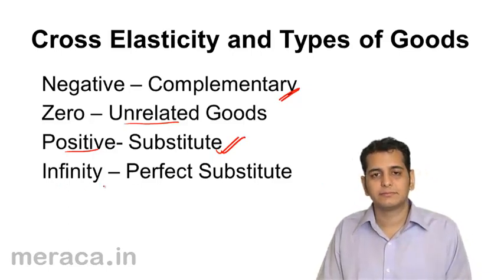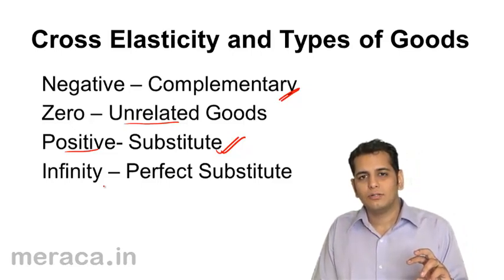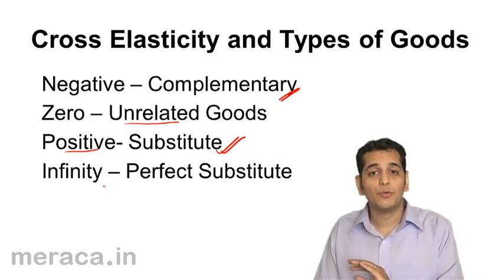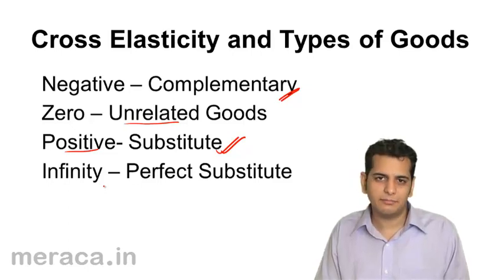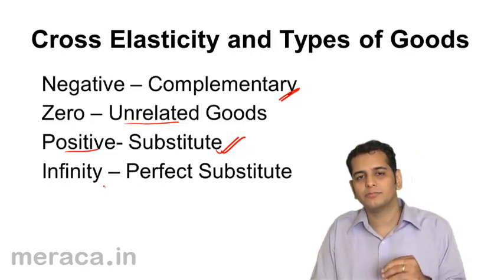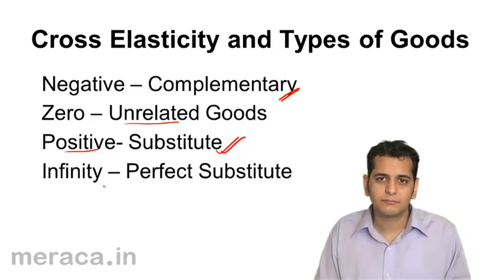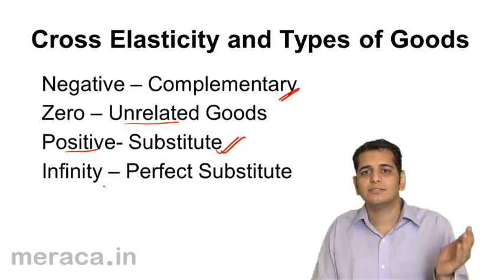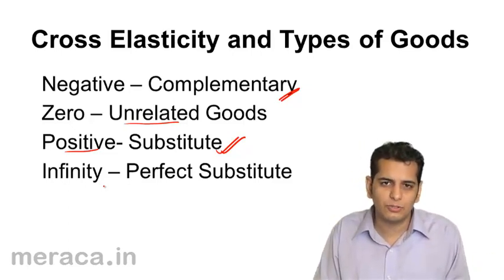Infinity means there is an indefinite change in demand with no change in price of a related good. That means the related good becomes the perfect substitute of the good being considered, because even without a change in price, there is a change in demand — that is, people are indifferent to consumption of either.